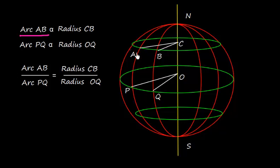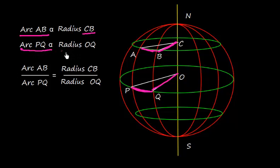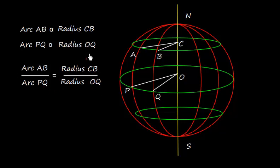So we can say arc AB is directly proportional to radius CB, and arc PQ is proportional to radius OQ. Dividing these, we get the relationship: arc AB divided by arc PQ equals radius CB divided by OQ.